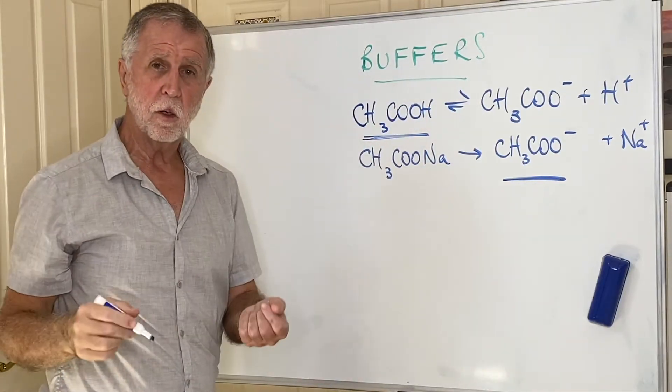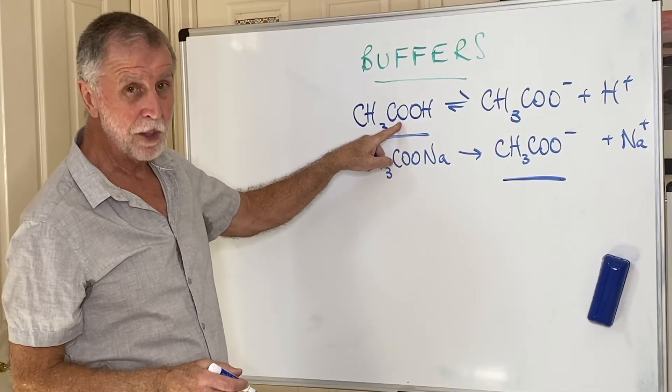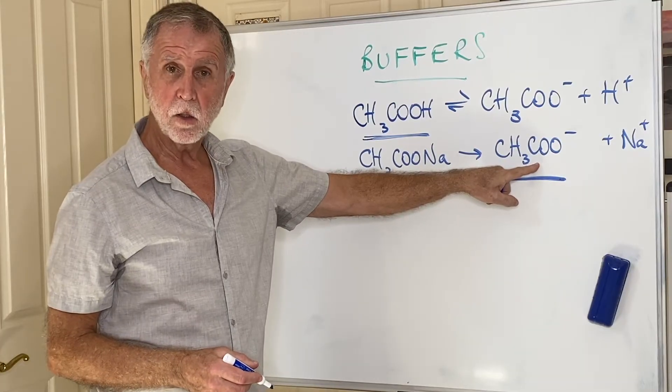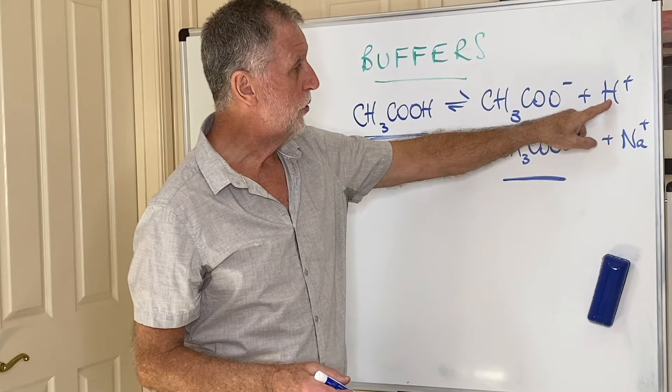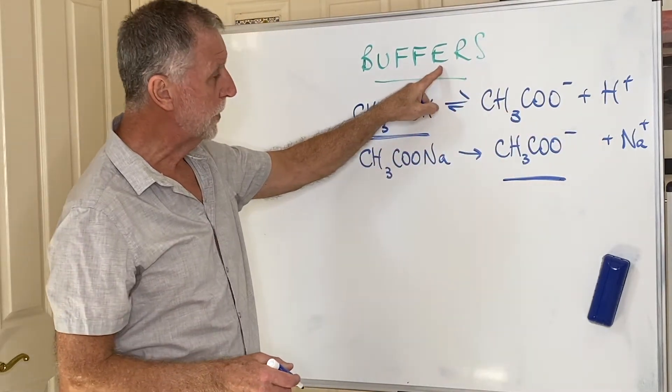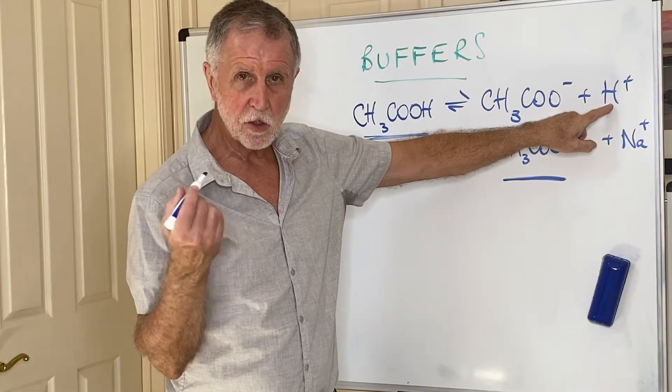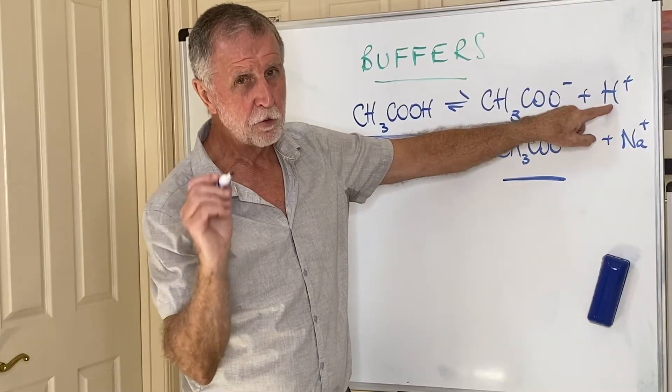So in a buffer, you will have an acidic reserve designed to cope with any base that comes in, and a basic reserve designed to cope with any acid that comes in. Now, the H-plus concentration there will give you the pH of the buffer. What we are trying to do is keep that pretty much the same value. It may change slightly, but it will only be very, very slight.